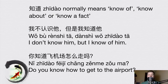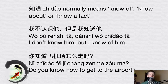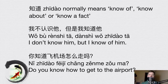我不认识他，但是我知道他 — 'I don't know him, but I know of him.' So the first 'know' is 认识 — normally when talking about a person we use 认识 — but when talking about knowing of somebody, we use 知道.